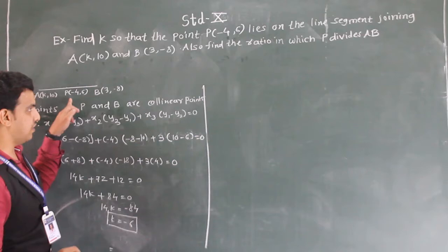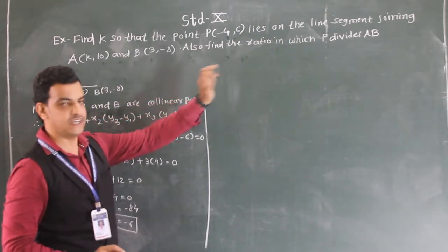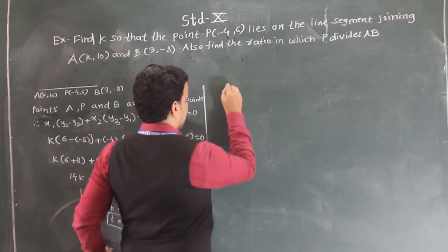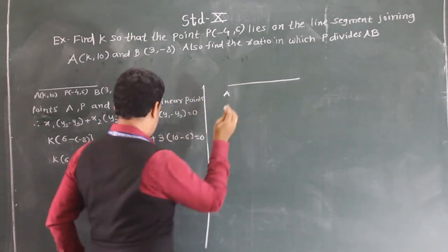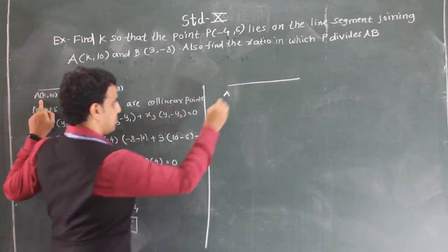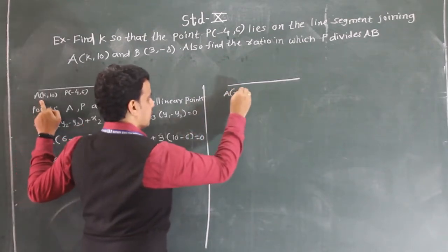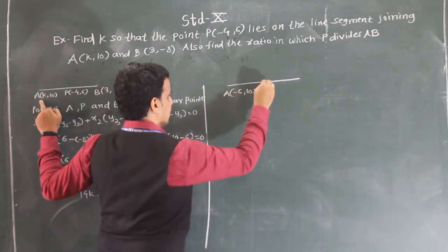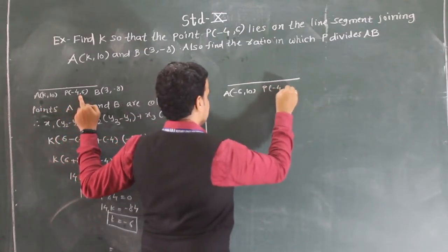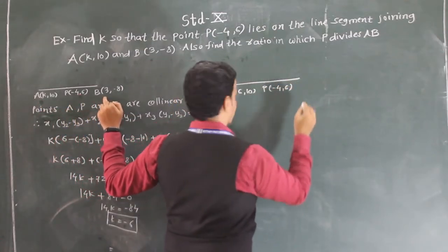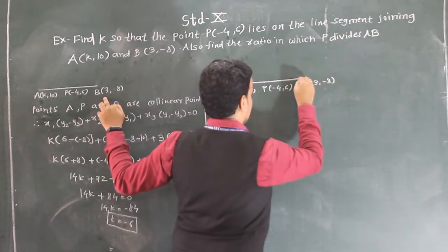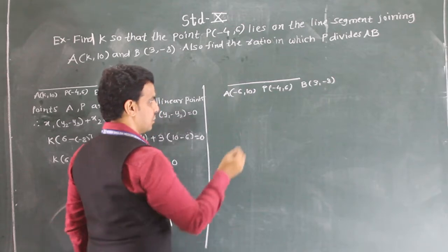Now we will find the ratio in which P divides AB. With K = -6, coordinates of point A are (-6, 10), coordinates of point P are (-4, 6), and coordinates of point B are (3, -8). Now we use the section formula.